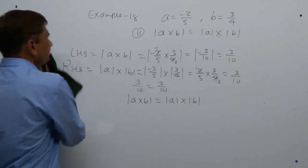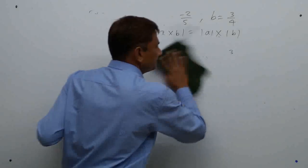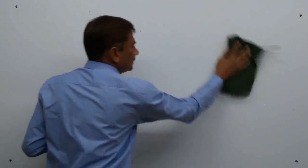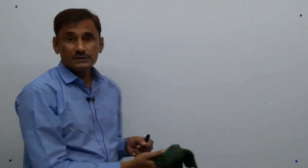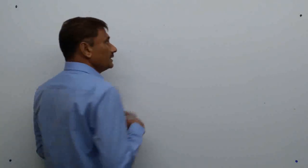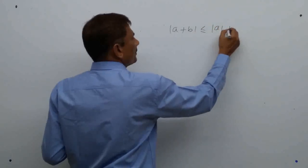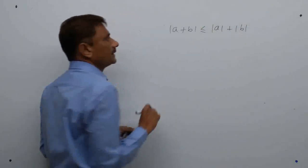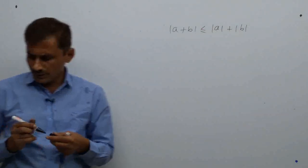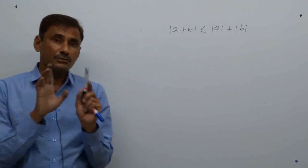Example 19 is an MCQ regarding Property 1. The question asks whether |x + y| is greater than, equal to, or less than |x| + |y|. From property 1, it can be either less than or equal to — never greater than. So the answer is either option A (less than) or option B (equal to). Let us verify with the given values.